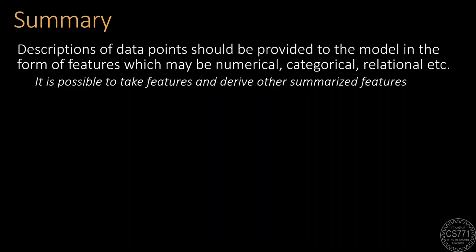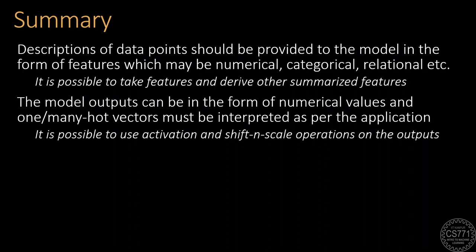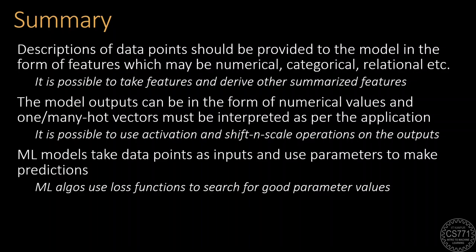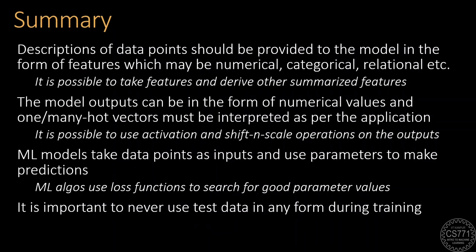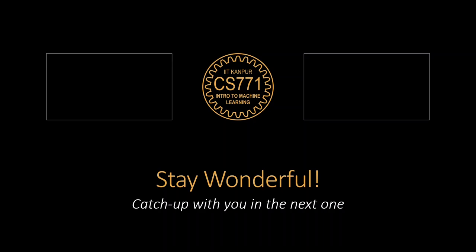So today, we learned how to interact with the machine learning model. We saw that descriptions of data points should be provided to the model in the form of features which could be numerical, categorical or relational and it's possible to even take features and derive other summarized features from them such as pooled features or bin features. We also saw that the outputs of the model can be in the form of numerical values or vectors and must be interpreted according to the application at hand. It is possible to use operations such as activation functions and shift and scale operations on these outputs. We also saw that machine learning models take data points as inputs and use parameter values to make their predictions. Machine learning algorithms on the other hand, use loss functions to search for good parameter values that can give outputs that match the true values. Finally, we had an important word of caution that we should never use test data in any form during training. So that's all for today folks. Stay wonderful and I'll catch up with you in the next one.